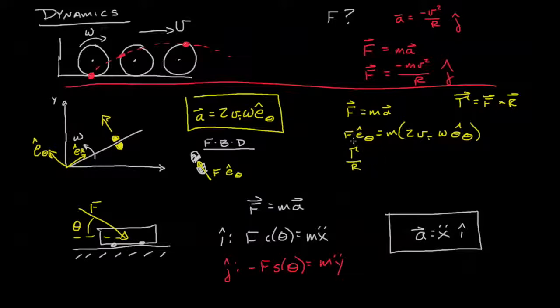And this is all in the e_theta direction: 2m vt omega. Or if we wanted a relationship between the torque and say the tangential velocity, we'd have 2m r vt omega.